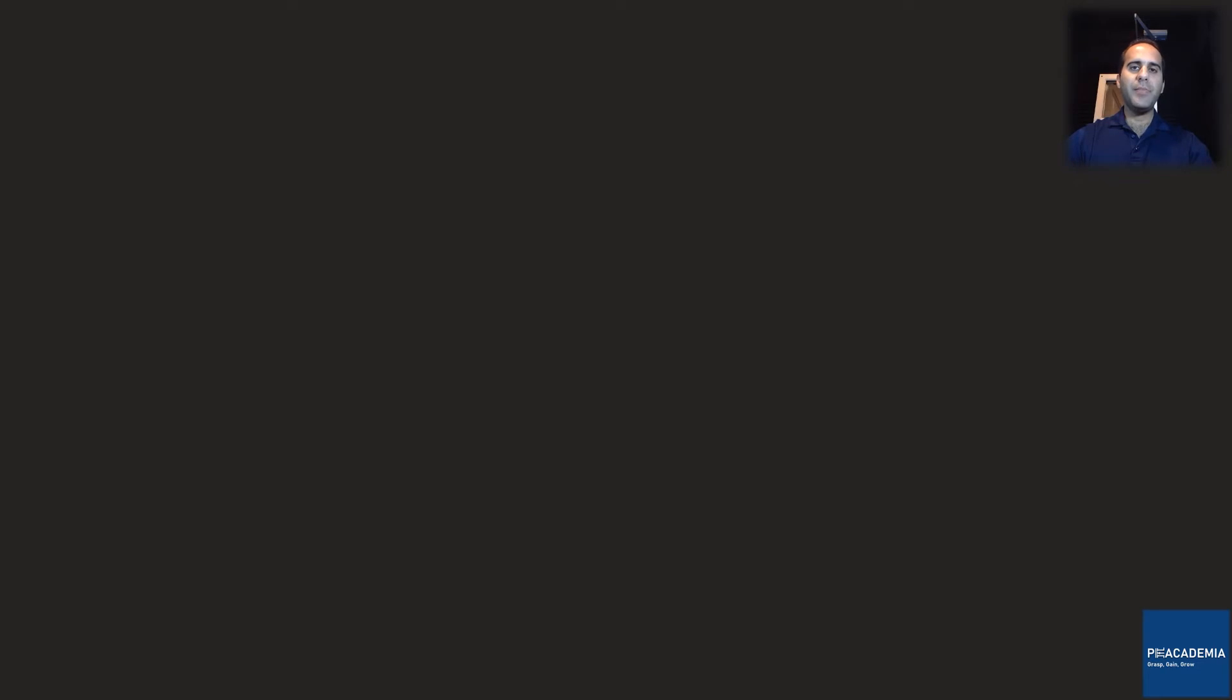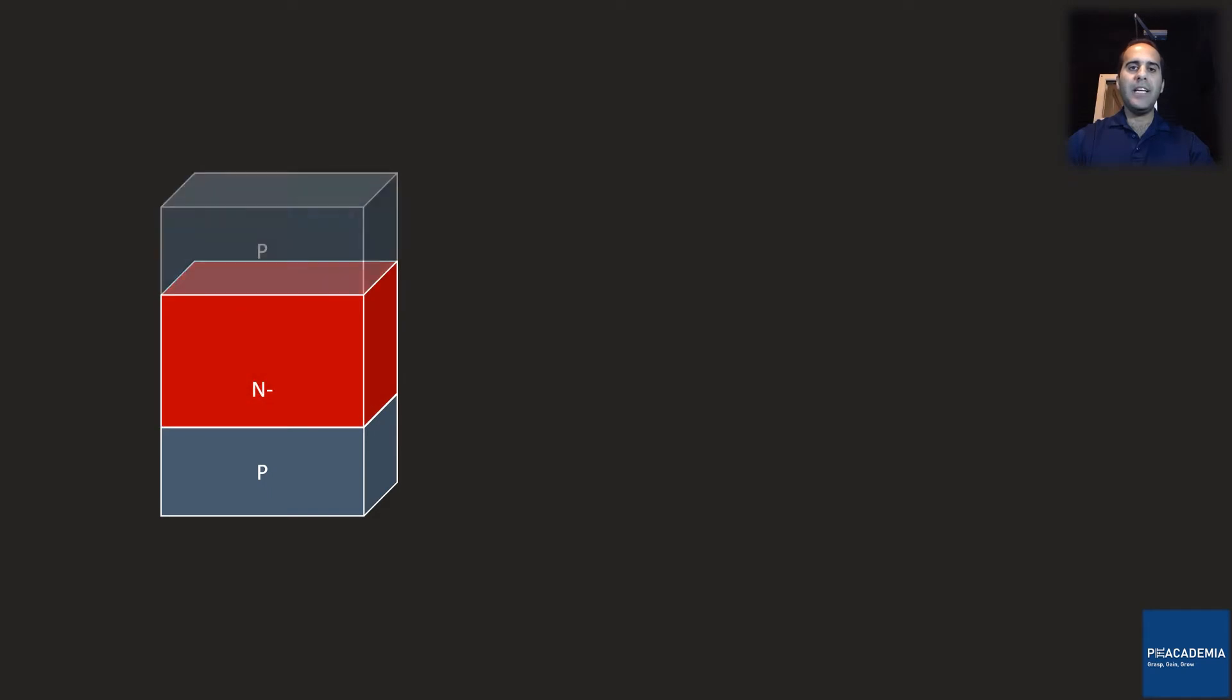A thyristor is made of four semiconductor layers: a P layer, N minus layer, P layer, and N plus layer. As a result, it has three junctions: J1, J2, and J3. Each one of these junctions are PN junctions and therefore we can model them with series diodes.